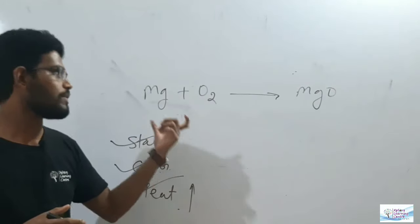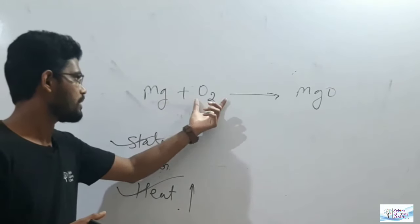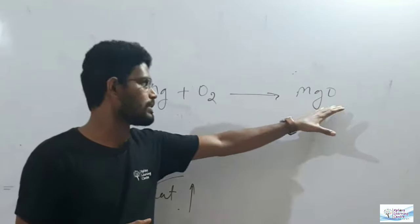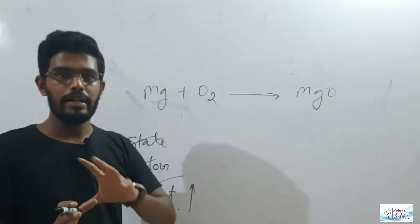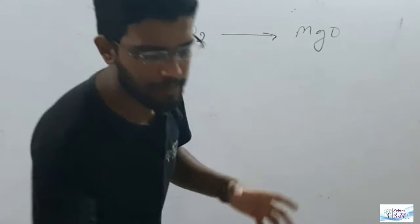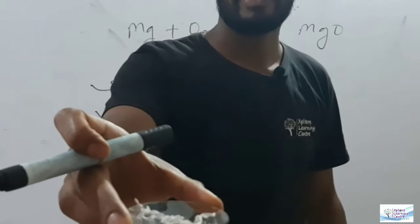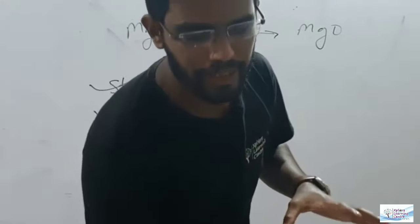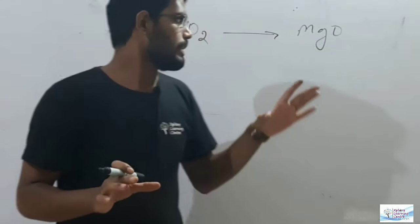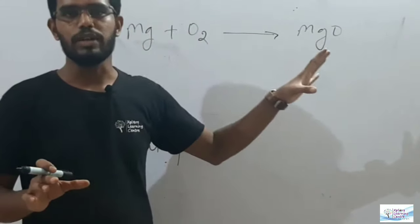What we have written: magnesium reacts with oxygen to give you magnesium oxide. Magnesium metal, that hard solid metal, converts into this powdered ash. This is the kind of chemical reaction that we need to explain with the help of activity 1.1.